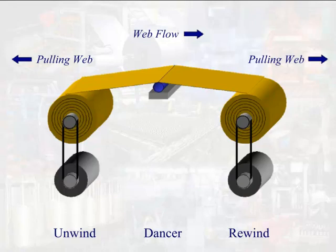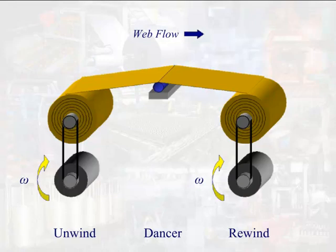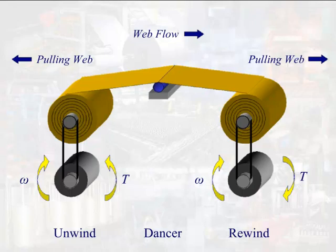As tension decreases, more force must be applied to the web, requiring the motor to develop more torque. As tension increases, less force must be applied, requiring the motor to develop less torque. The web flow in this application requires that both motors operate in the same direction. Because the rewind roll is pulling the web, the torque developed by the rewind motor will be in the same direction as the motor rotation. However, because the unwind roll must pull in the opposite direction, the unwind motor must develop torque in the opposite direction of its rotation. One motor controls the web speed and the other controls the web tension. The rewind roll controls speed by pulling the web at a certain rate, and the unwind roll controls web tension by pulling with a certain amount of force — so we will look at the unwind roll in torque control mode.